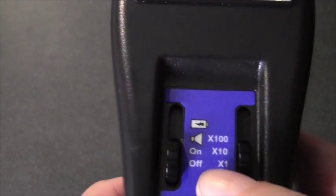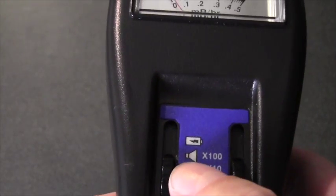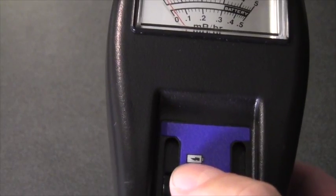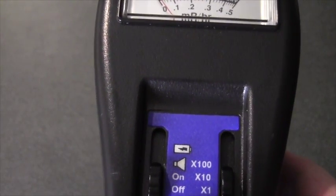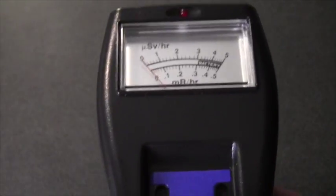This is manual ranging, and here are the multipliers: times 100, times 10, times 1. On/off, audio, and battery check switch. Now to test it.